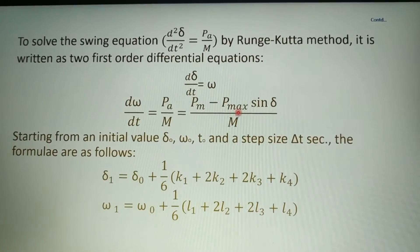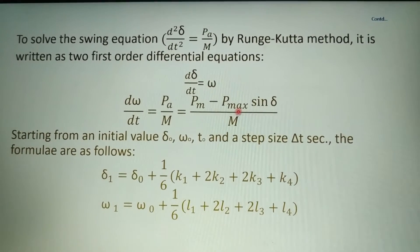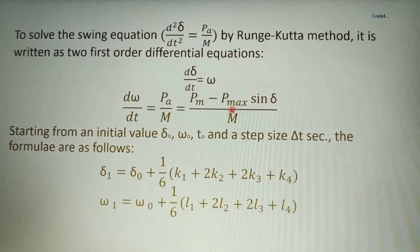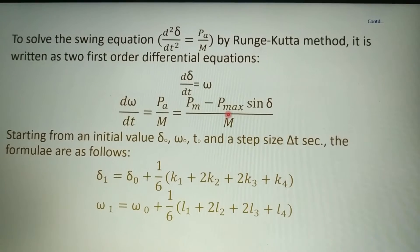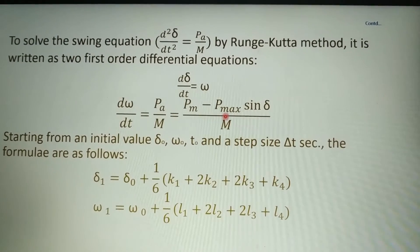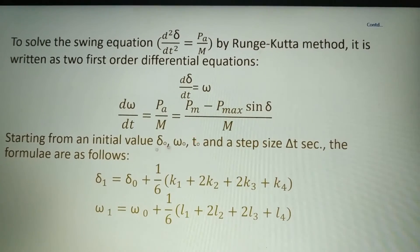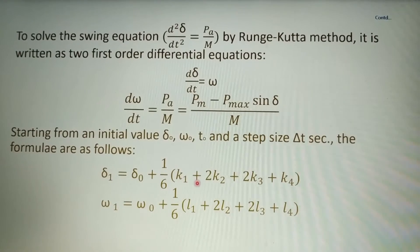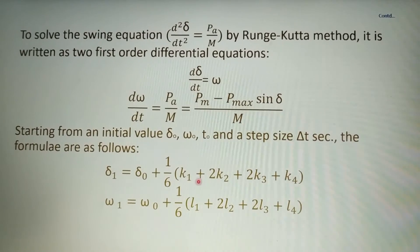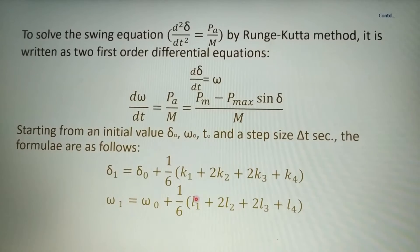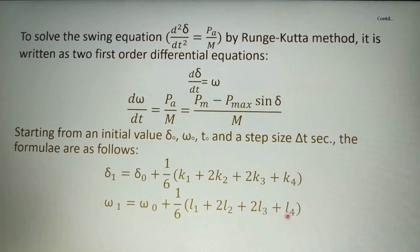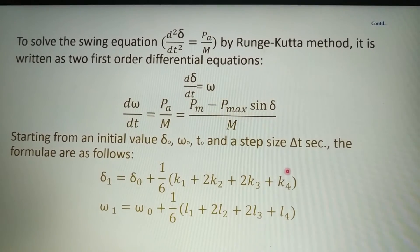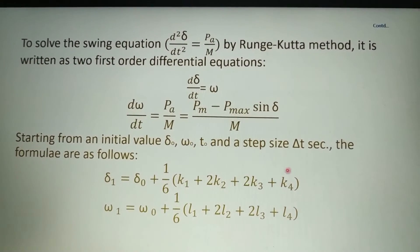So dω/dt = (Pm − Pmax·sin(δ)) / M. We assume initial values of δ, ω, and t as δ0, ω0, and t0 with a step size of Δt seconds. After the first iteration: δ1 = δ0 + (1/6)(k1 + 2k2 + 2k3 + k4) and ω1 = ω0 + (1/6)(l1 + 2l2 + 2l3 + l4).